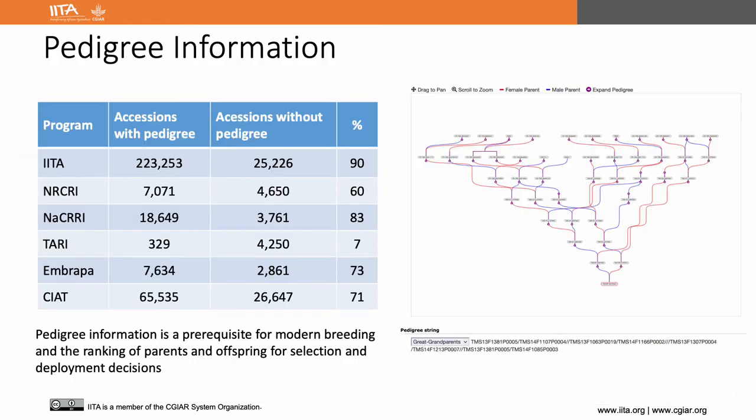We have also focused on making pedigree information available for accessions or clones on CassavaBase within each breeding program. You can see the percentage of clones with pedigree information from each breeding program. Once you have this pedigree information on CassavaBase, you can view it as a pedigree tree using the pedigree viewer. This pedigree information can be used for different analyses.